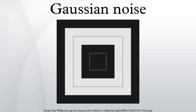Gaussian noise is statistical noise having a probability density function equal to that of the normal distribution, which is also known as the Gaussian distribution. In other words, the values that the noise can take on are Gaussian distributed.